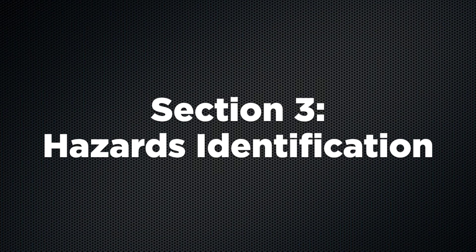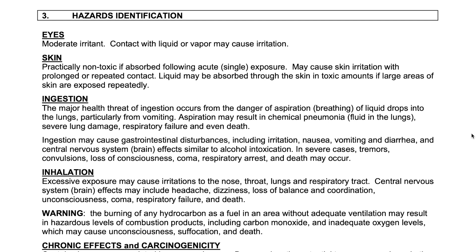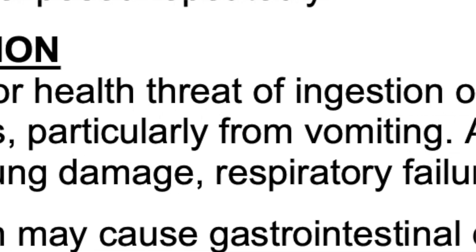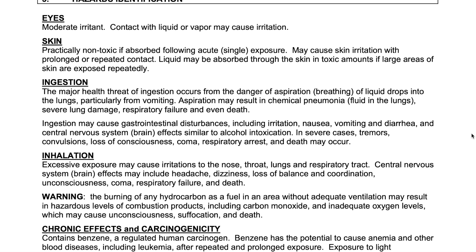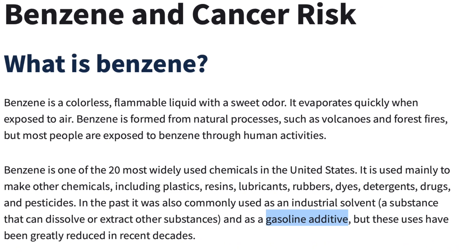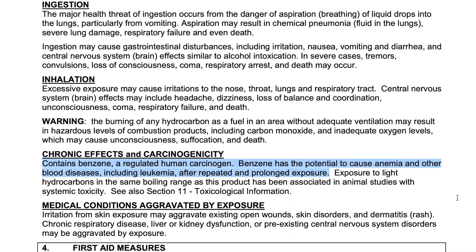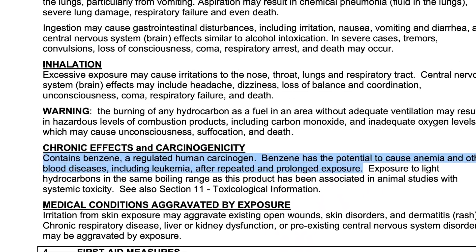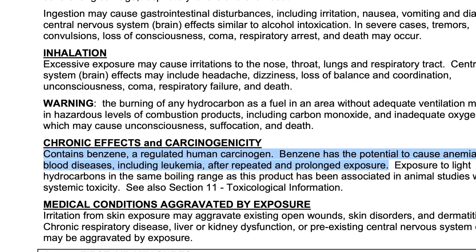Section three: Hazards Identification. In this section, you can find the different dangers of using this chemical. For example, with gasoline, don't let this get in your eyes — it can burn your skin and damage your lungs if you inhale great amounts of it. Notice the chronic effects and carcinogenicity section: it contains benzene, a regulated human carcinogen, meaning it causes cancer. Benzene has the potential to cause anemia or other blood diseases, including leukemia, after repeated and prolonged exposure. Don't get this on you — be careful handling it.